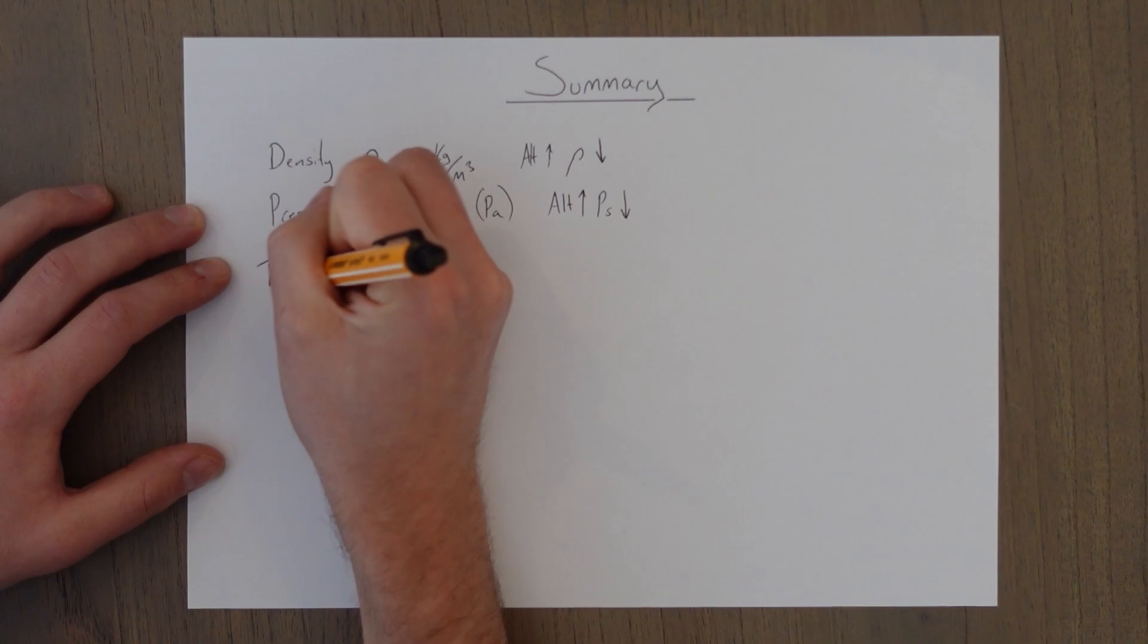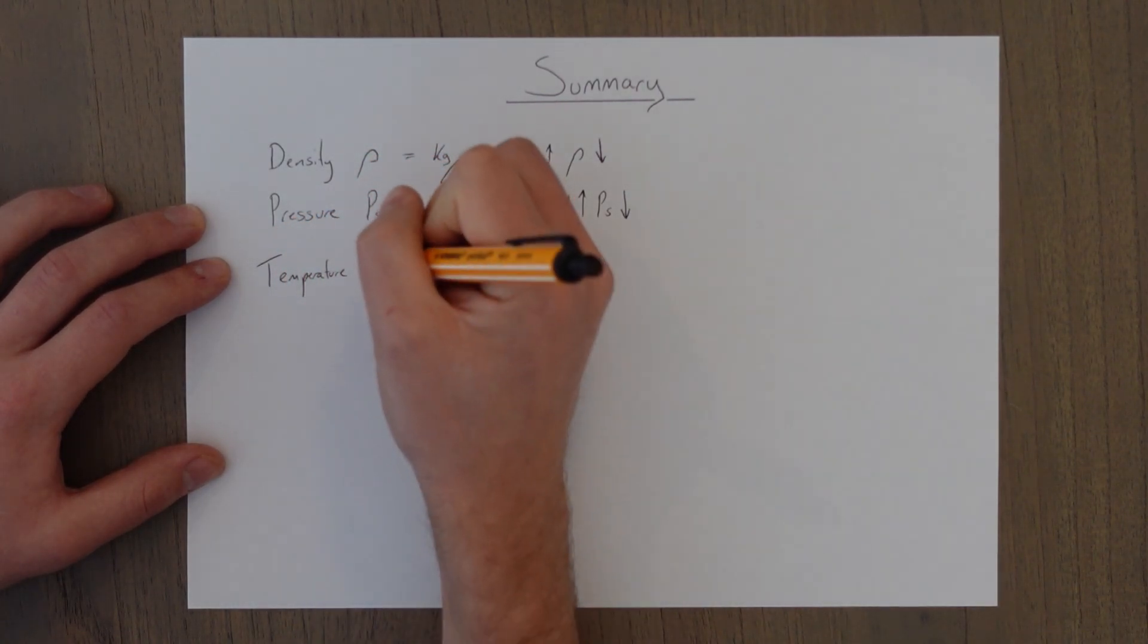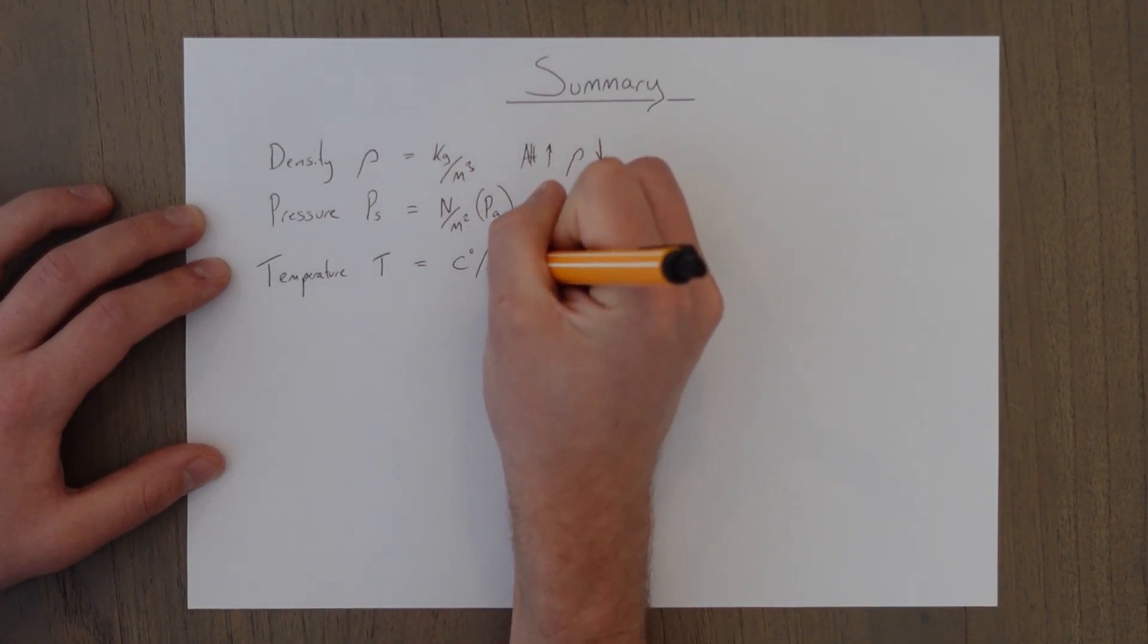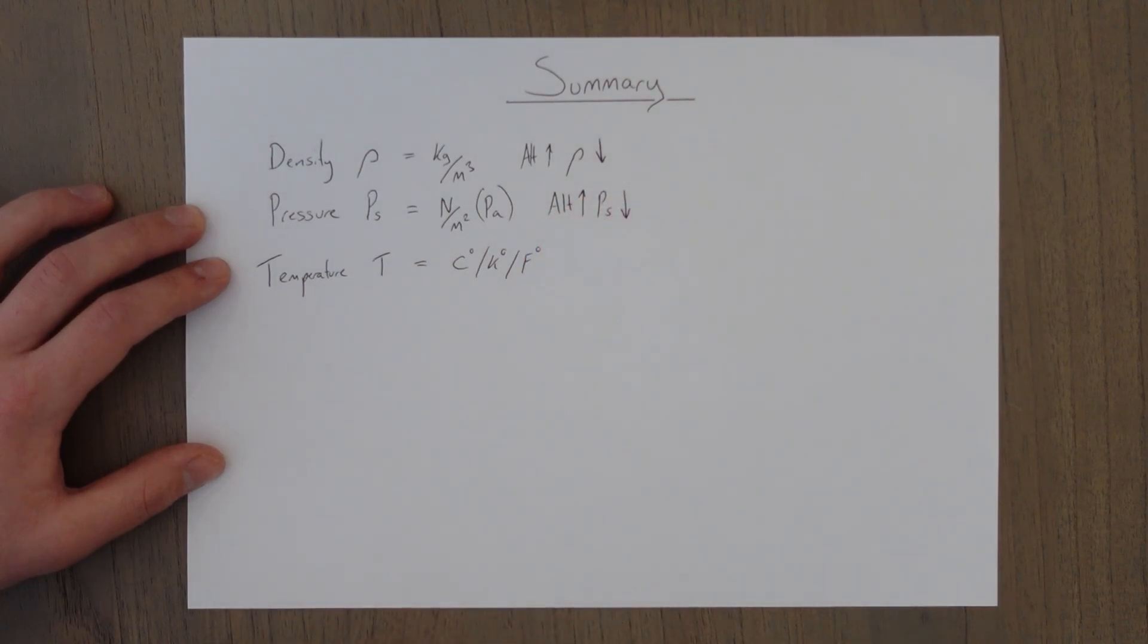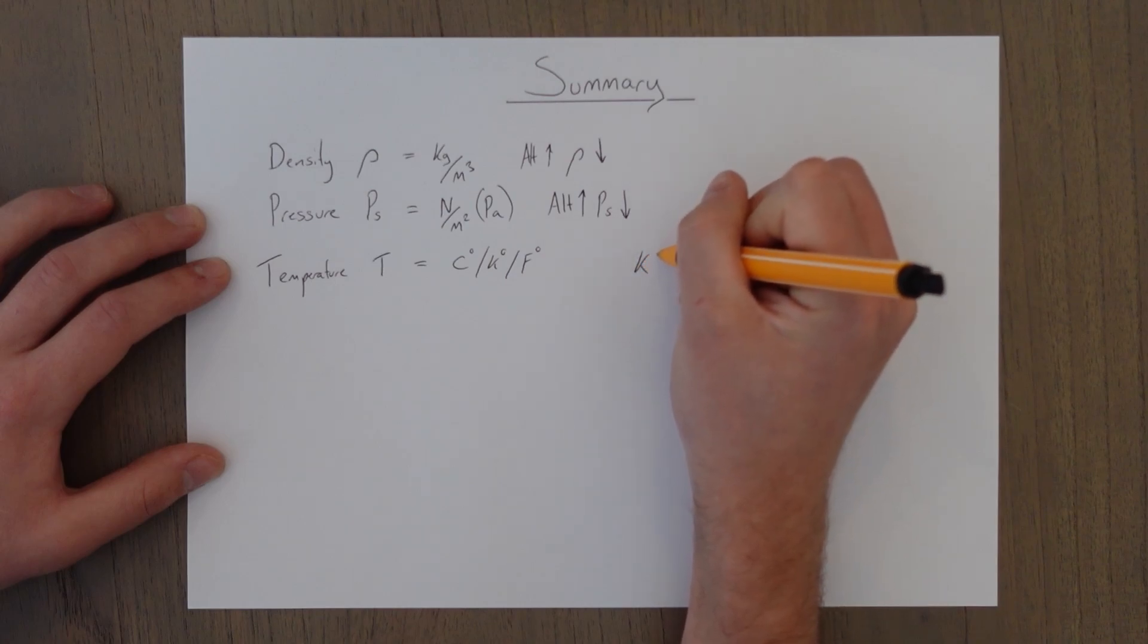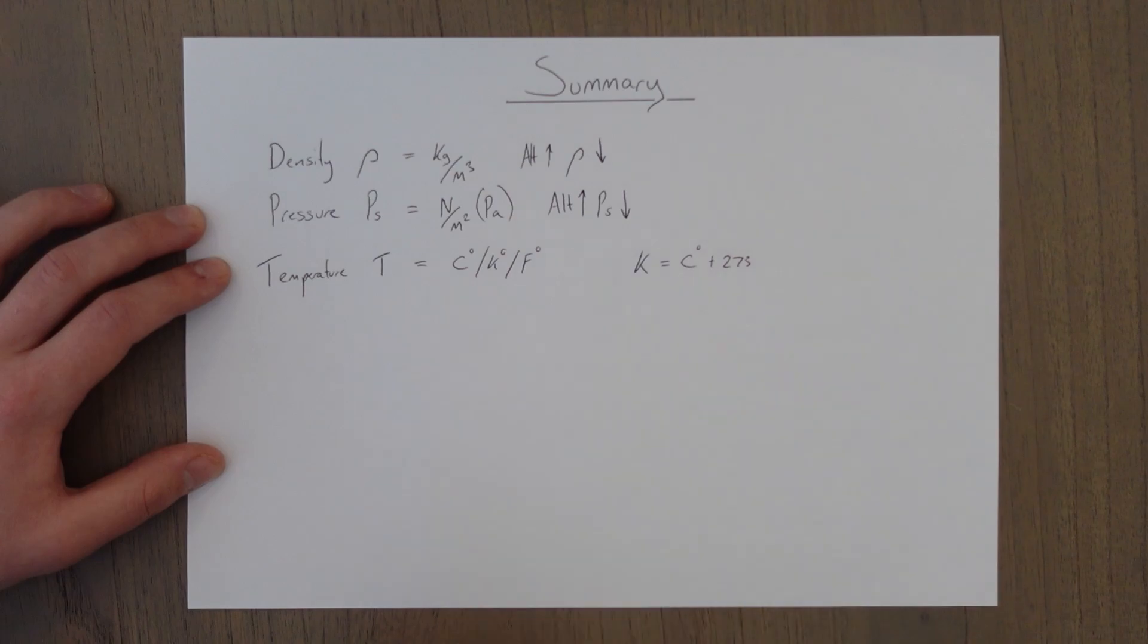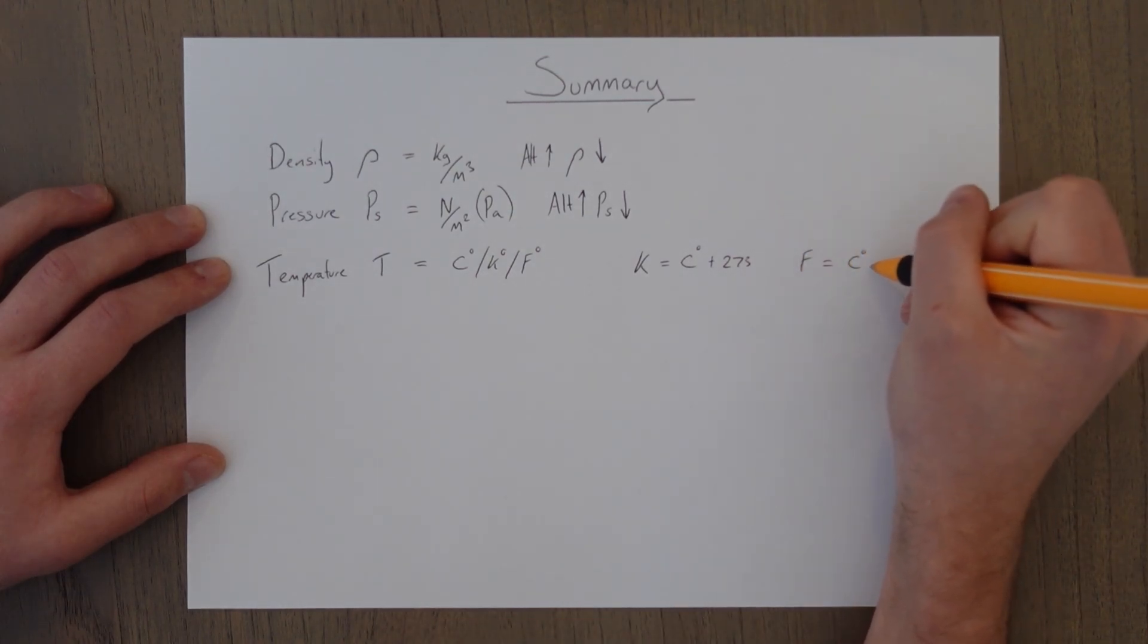Temperature. Temperature is symbol T. It is given as either degree Celsius, degrees Kelvin or sometimes degrees Fahrenheit. To convert between them, Kelvin is simply the degrees in Celsius plus 273. And Fahrenheit is the degrees in Celsius multiply by 1.8, then you add 32.